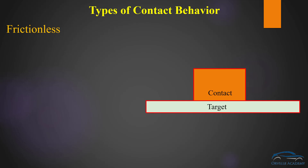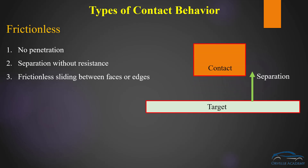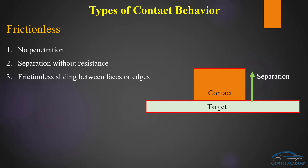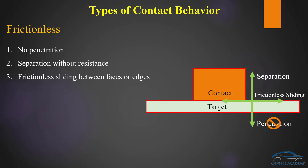The third type of contact is known as frictionless contact. In case of frictionless contact there is no penetration allowed, but here separation can happen without any resistance. In terms of sliding, frictionless sliding between the faces or edges is also allowed. Graphically you can see the separation is allowed — the contact surface can move away from the target surface causing the contact to open — but penetration is not allowed. Since the name itself is frictionless, the sliding can happen without any resistance. Frictionless contact is typically used for well-lubricated surfaces.